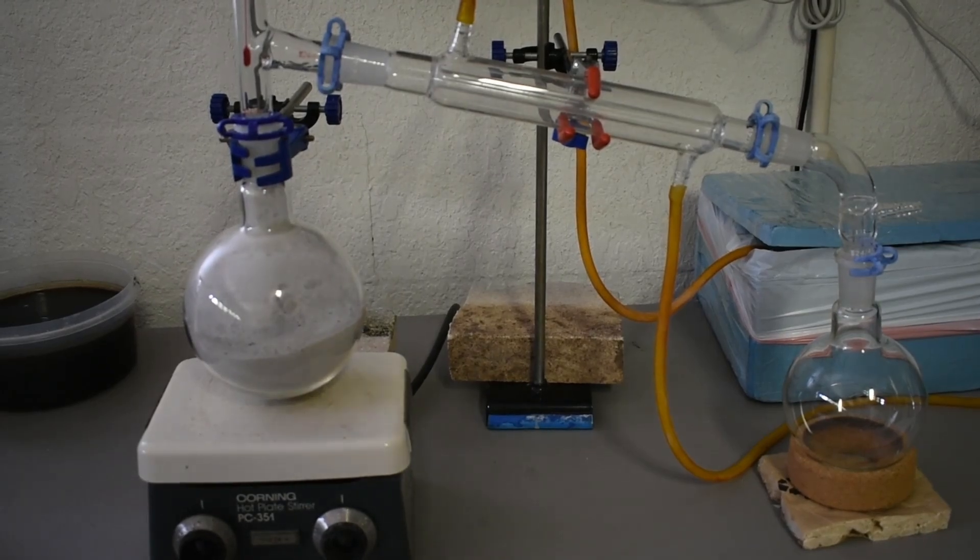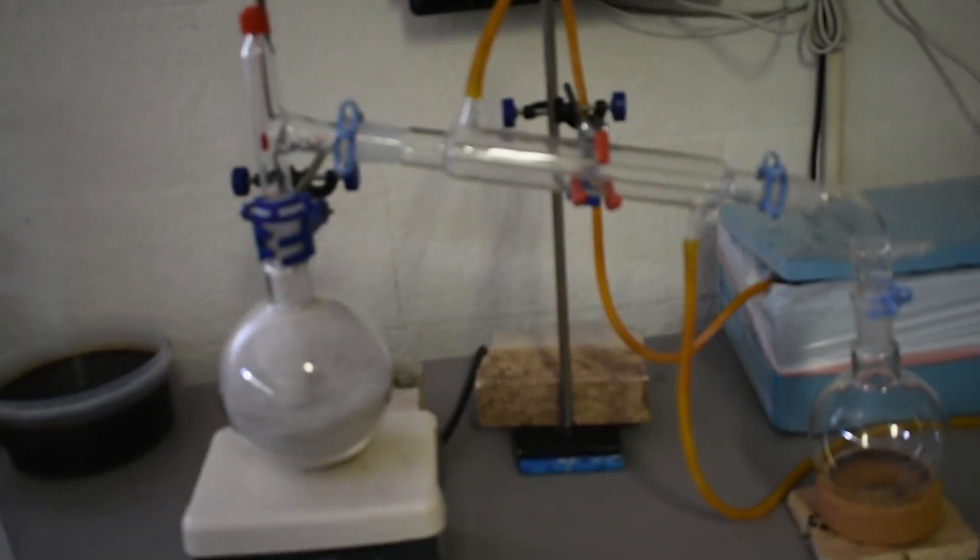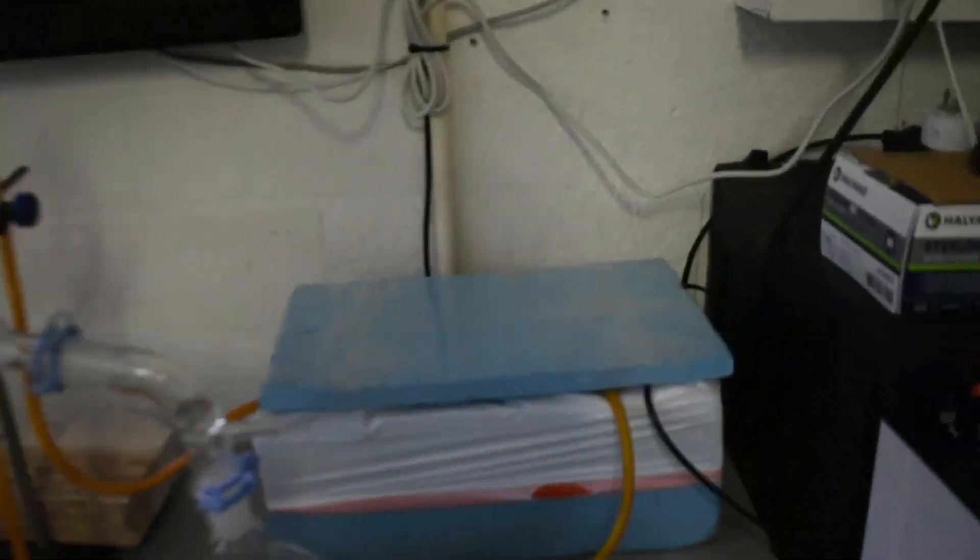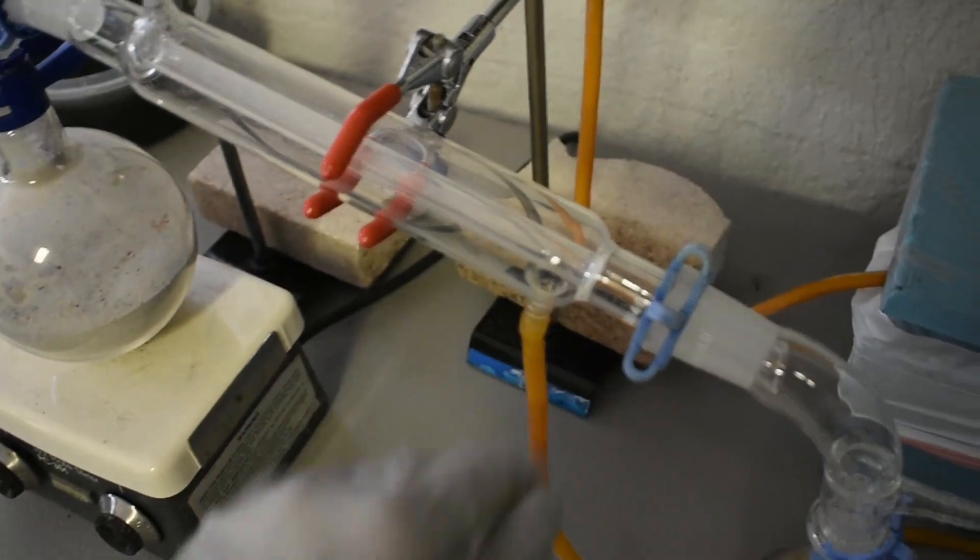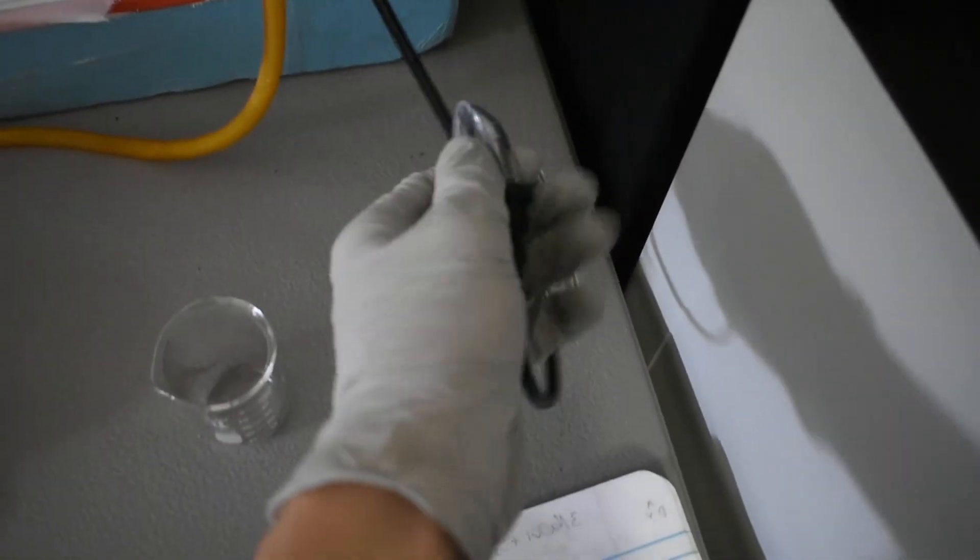And in case you're wondering, this is how I circulate the water. This is an old Deschem box, and I just put some ice packs in there and a little aquarium pump you can get off eBay. Then I put the lid on for insulation, and the tubing goes to the condenser. We can actually plug that in right now.